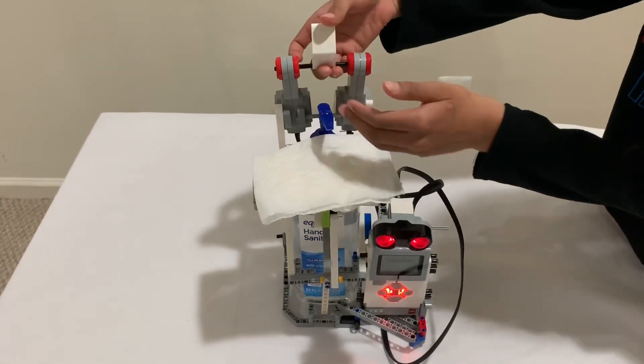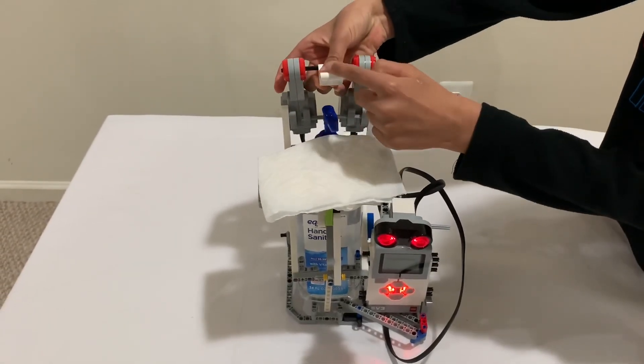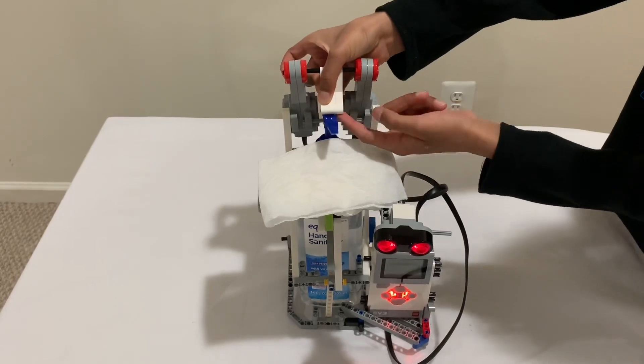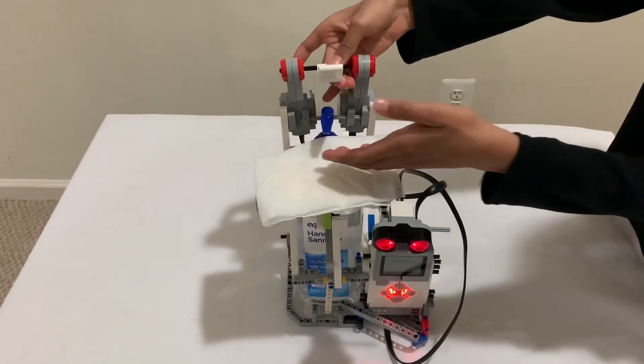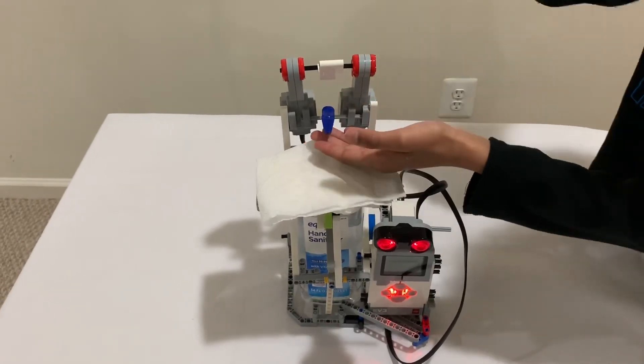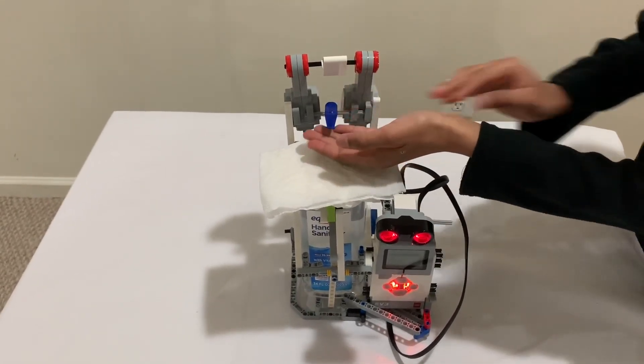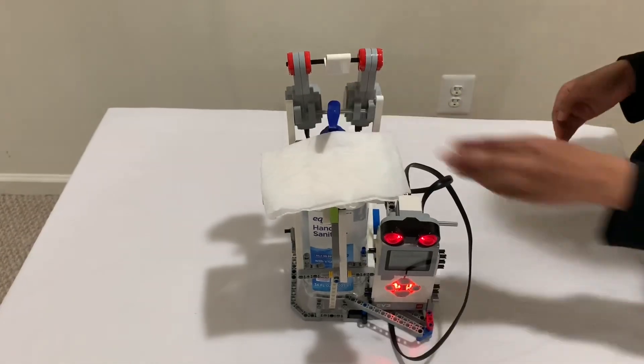The two large motors spin this wheel, which makes this hit the hand sanitizer part where you touch it. The hand sanitizer part gets pushed down, and that's when the hand sanitizer gets released.